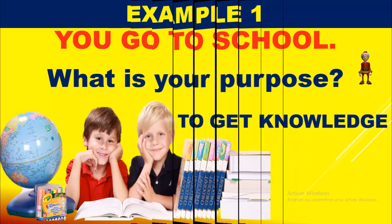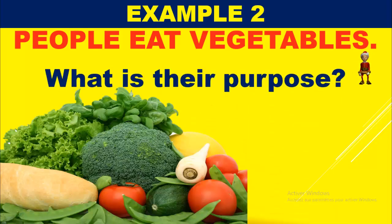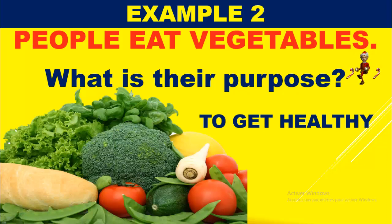Example number two: people eat vegetables. On mange des légumes. Pourquoi? Dans quel but? What is their purpose? People who eat vegetables — maybe to get healthy. Pour être en bonne santé, ce que vous visez, quel est votre objectif? C'est être en bonne santé. It is your purpose.